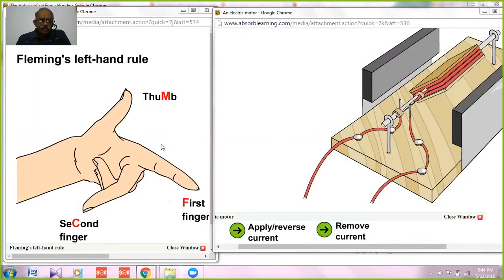The thumb representing the motion, where M is to be taken as the motion of the conductor, F to be taken as the force, and C in the second finger to be taken as the flow of the current.